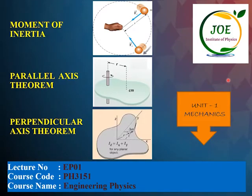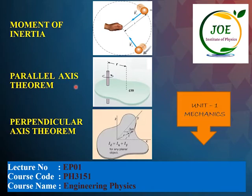Welcome to Joe InstaPhysics. Course name: Engineering Physics. Course code: PH3151. Unit 1: Mechanics. Lecture number EP01. In this lecture, let's talk about the moment of inertia, parallel axis theorem, and perpendicular axis theorem.